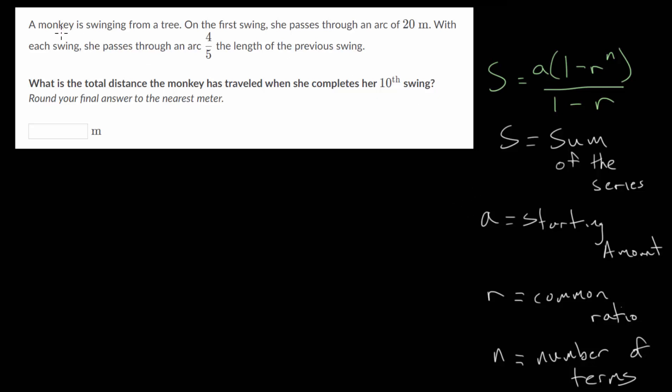A monkey is swinging from a tree. On the first swing, she passes through an arc of 20 meters. So that's our starting value, A. With each swing, she passes through an arc 4 fifths the length of the previous swing. So this 4 fifths, that is our common ratio. Going from one swing to the next, we will multiply by 4 fifths.